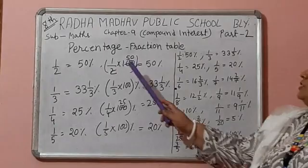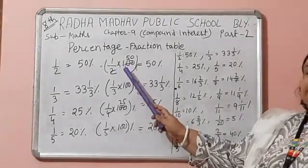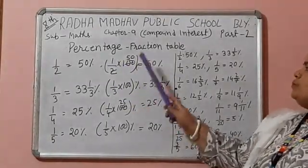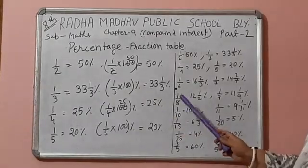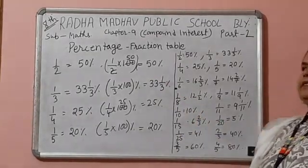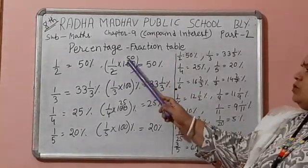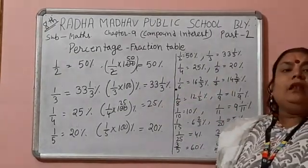It is so simple. First, you write 1 by 2, multiply by 100 and then you put the bracket and after bracket, you put percentage sign. And after calculation, 50% will come.